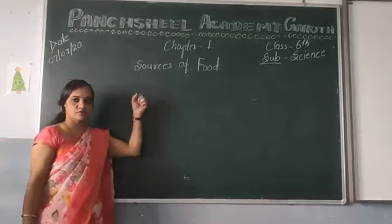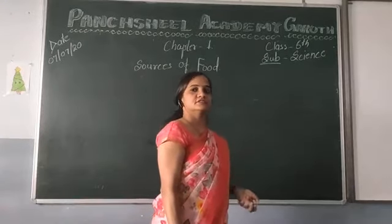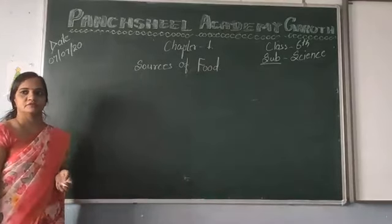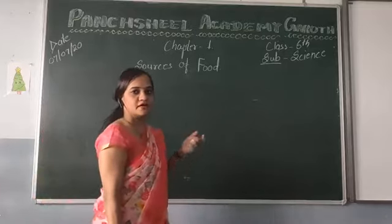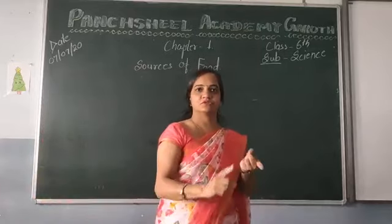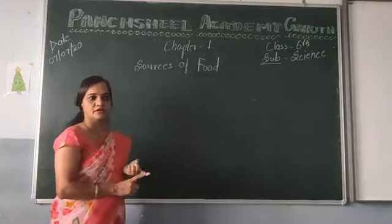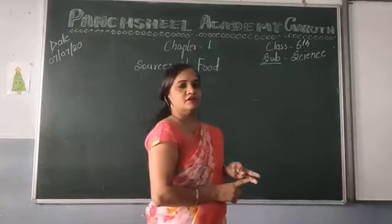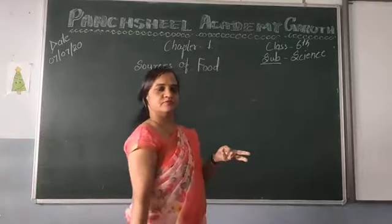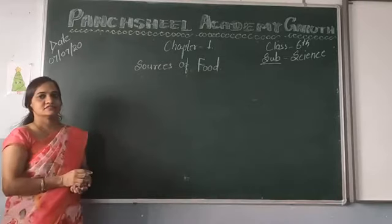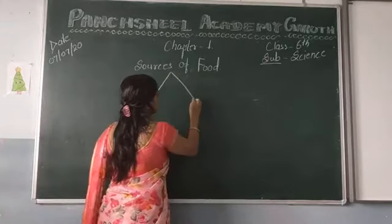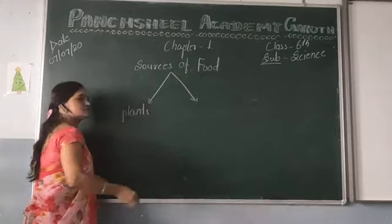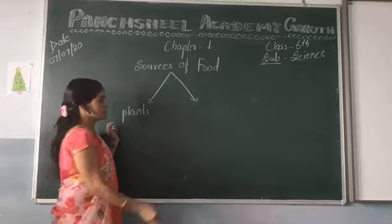Sources of food: have you ever thought where the ingredients in the dishes we eat come from? They come from either plants or animals. We eat milk, oil, spices, pulses, cereals — where do all these ingredients come from? There are two categories: some ingredients come from plants and some come from animals.